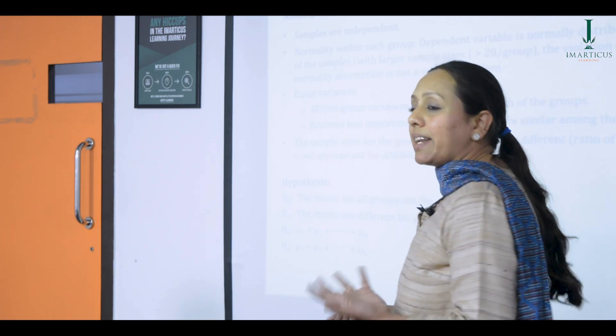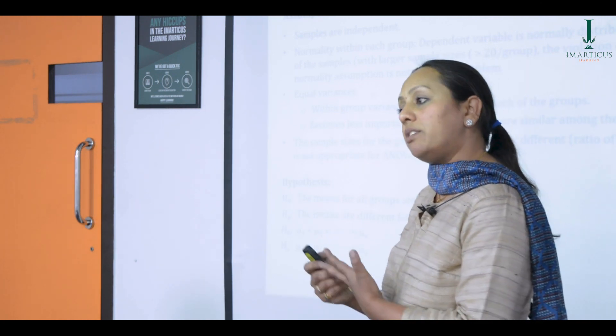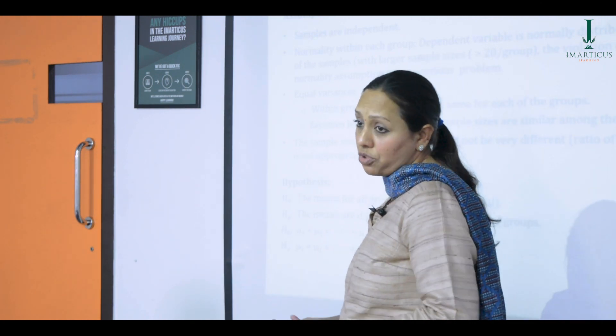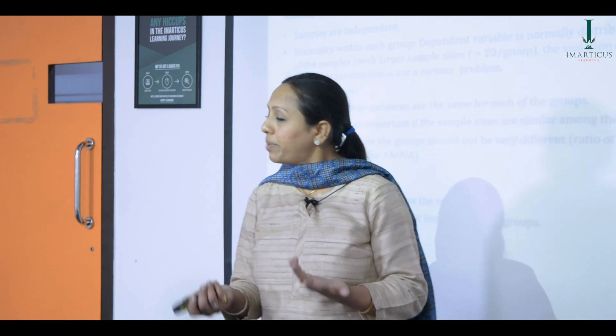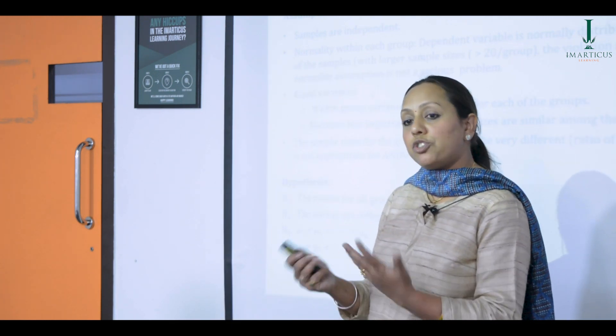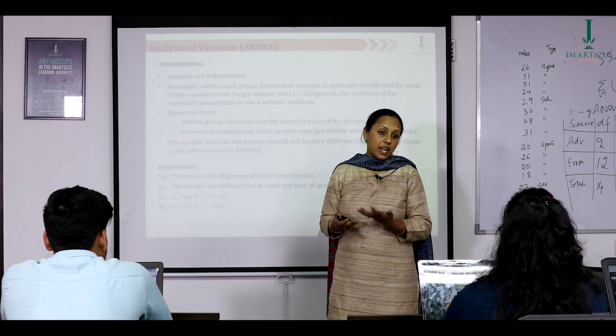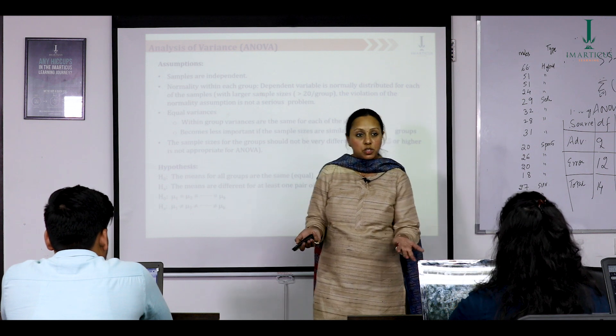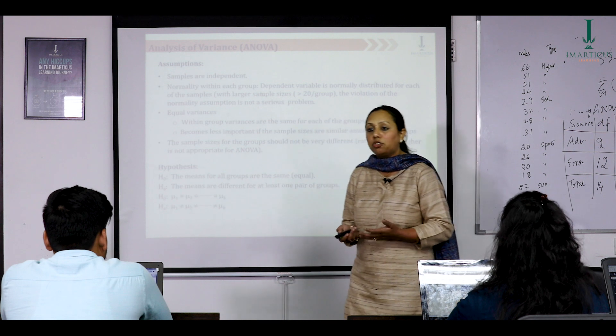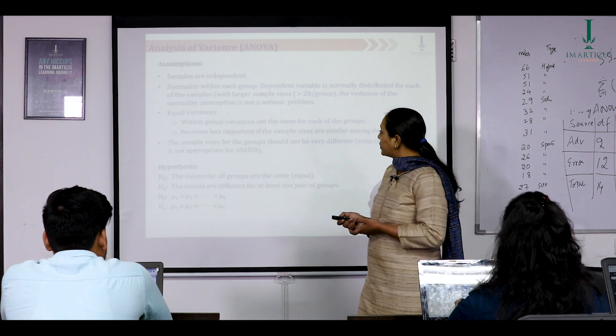We make sure that the continuous dependent variable follows normal distribution. We have covered in our previous classes how do we ensure our data follows normal distribution. So either we do a normality test or we take a look at our histogram, QQ plot also helps us ascertain if my data follows normal distribution or not.